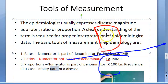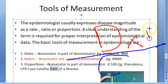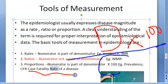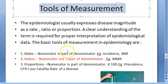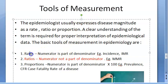For example, the number of deaths due to TB divided by the number of cases of TB, multiplied by 100, gives you the case fatality rate — which is not a rate at all, but a proportion.